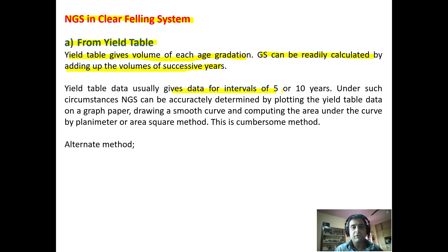Growing stock can be readily calculated by adding up the volumes in successive years. It usually gives data for intervals of 5 or 10 years. Under such circumstances normal growing stock can be accurately determined by plotting the yield table data on a graph paper, drawing a smooth curve and computing the area under the curve.